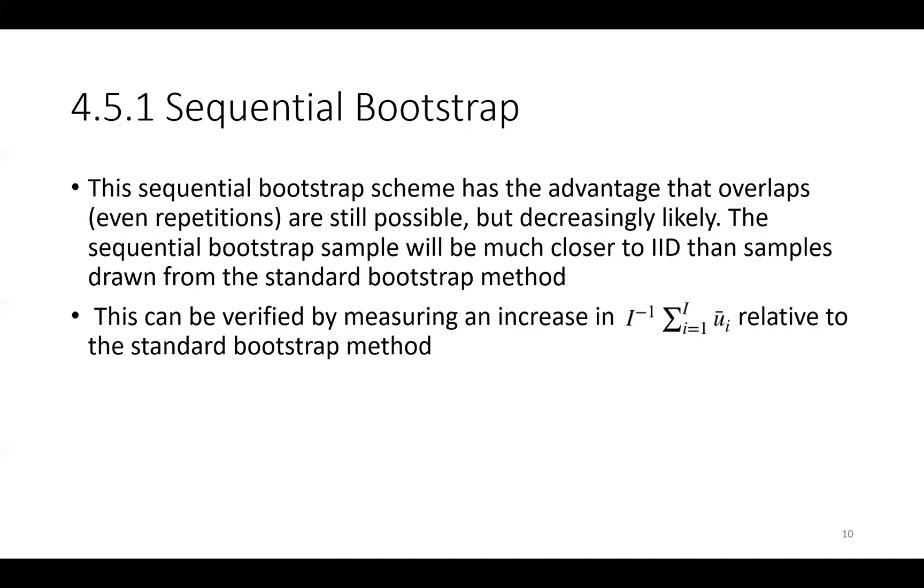The sequential bootstrap scheme has the advantage that overlaps, even repetitions, are still possible but decreasingly likely. The sequential bootstrap sample will be much closer to IID samples than drawn from the standard bootstrap method mentioned before. This can be verified by measuring an increase in the product between I^(-1) and the summation of the average uniqueness relative to the standard bootstrap method.